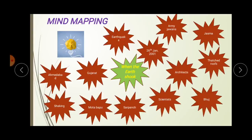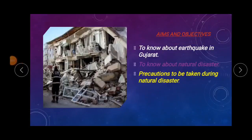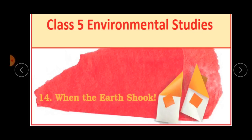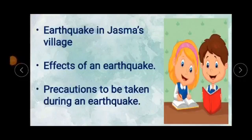The mind map covers: earthquake of 26 January 2001, army jawans, Jasma, architects, the collapsed roof, scientists, serpent, Motabapo, the shaking of Ahmedabad, and Gujarat. The aims and objectives are: to know about the earthquake in Gujarat, to know about natural disasters, and precautions to be taken during a natural disaster.